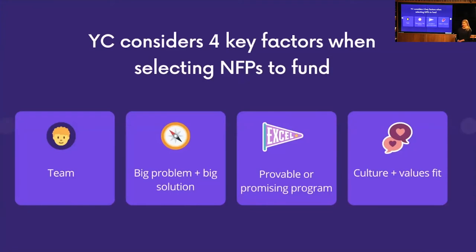There are some really powerful tips in that video about approaching a pitch with the right mindset and bringing clarity. As they all emphasize, you've got to say it simply and not use jargon. Y Combinator does fund mostly for-profits, but they do have a select nonprofit cohort. What they really look for: the team is the most important thing — they need to trust this team can solve what they're setting out to do. They look for a big problem and an equally big solution, a provable program with some traction already, and a culture and values fit.